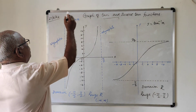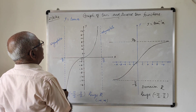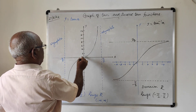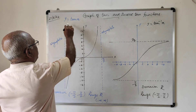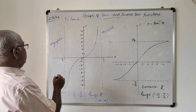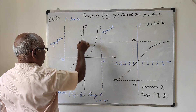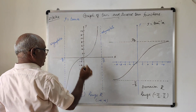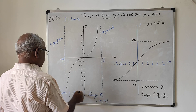For the tan function y = tan x, this is the graph of the tan x function. The domain of the tan function is minus π/2 to π/2, and the range of the function is all real numbers, minus infinity to plus infinity along the y-axis.